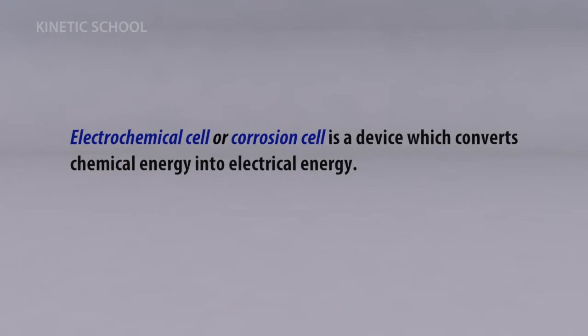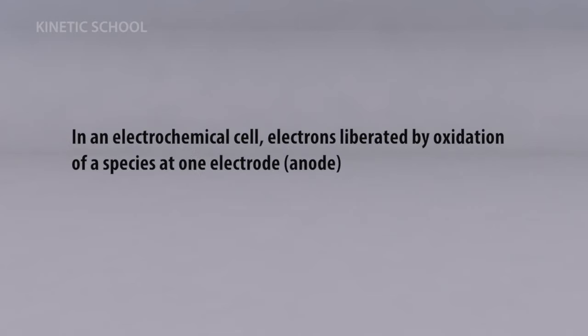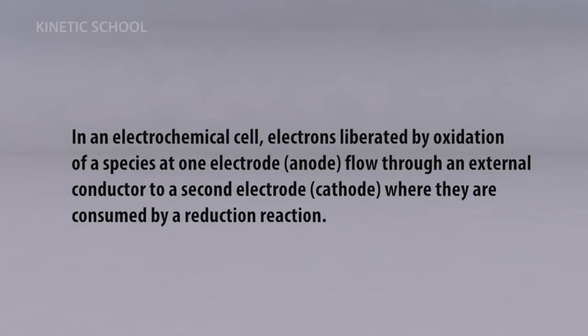Electrochemical cell or corrosion cell is a device which converts chemical energy into electrical energy. In an electrochemical cell, electrons liberated by oxidation of a species at one electrode flow through an external conductor to a second electrode where they are consumed by a reduction reaction.